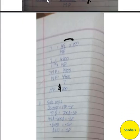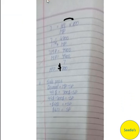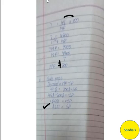Now we need to find the sale price using the discount formula: discount equals mark price minus selling price. Discount was $49, mark price we found is $700. So: 49 = 700 minus selling price. Moving 700 to the other side gives a negative, and the selling price comes out to $651.